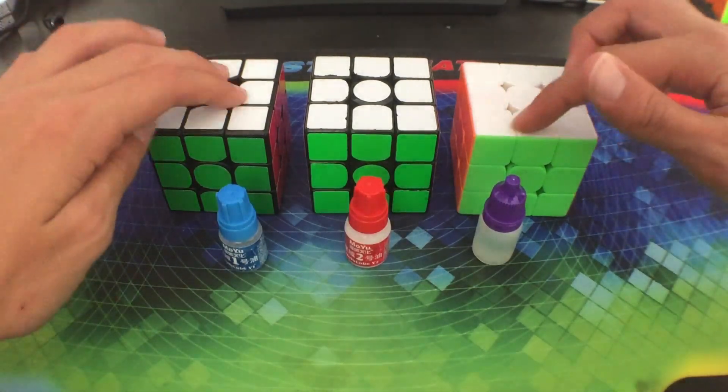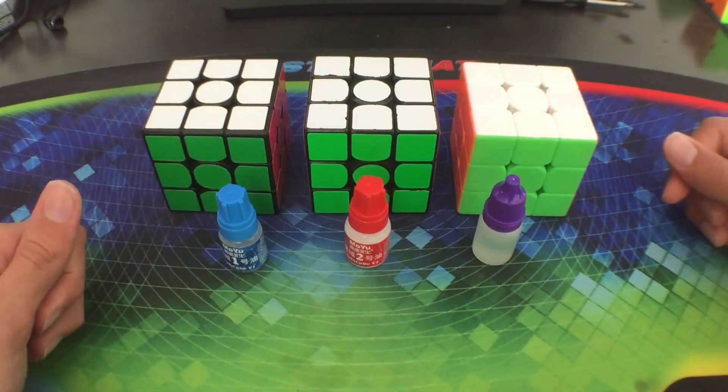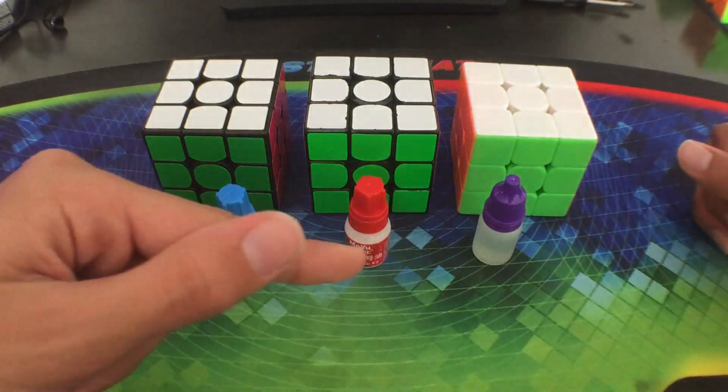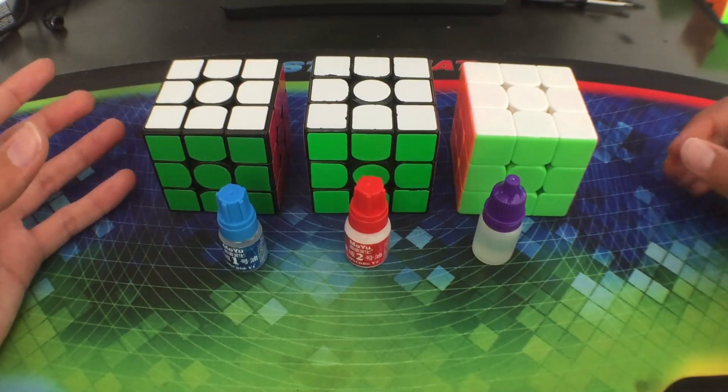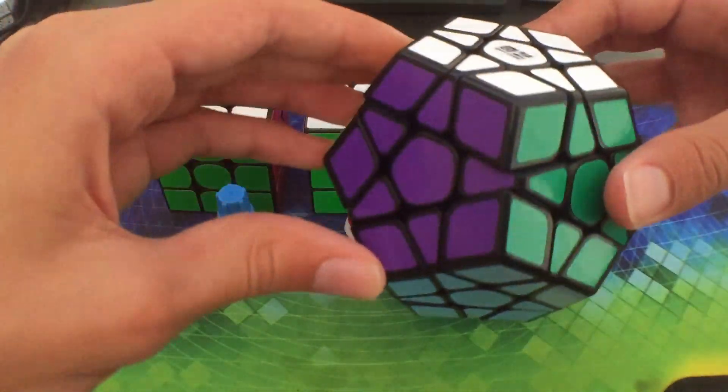Hello everybody, today I'll be testing these three cubes with these three lubes. So these are the Moyu v1, v2, and v3 lubes that I received from dailypuzzles.com.au in a package. I also got this megaminx, the Chi Hang megaminx.